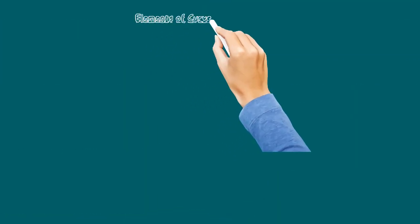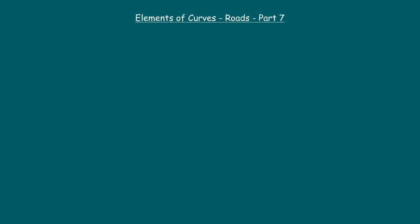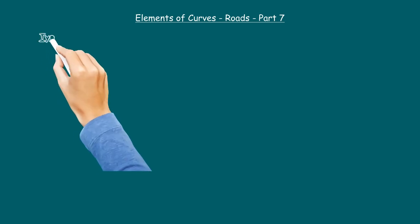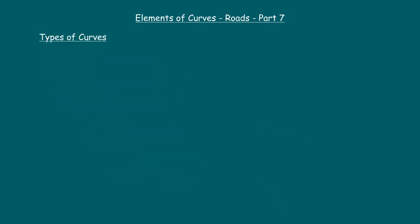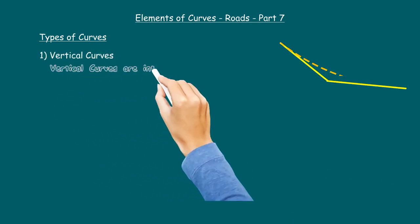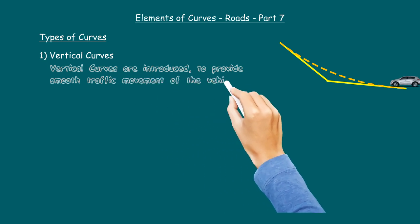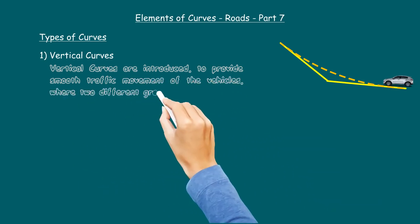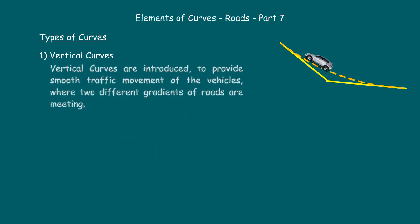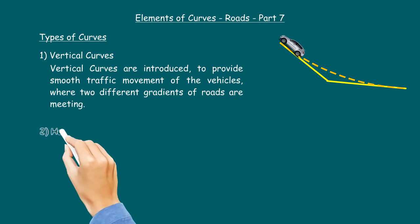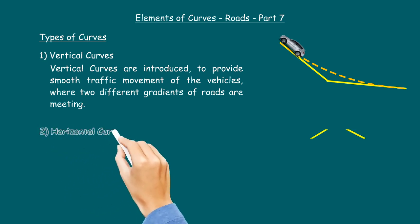From this episode onwards we will discuss about the curves. The first major type is vertical curves. Vertical curves are introduced to provide smooth traffic movement of vehicles where two different gradients of roads are meeting.